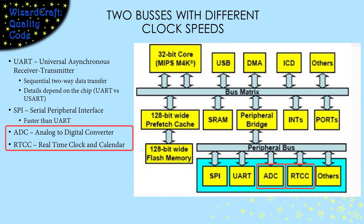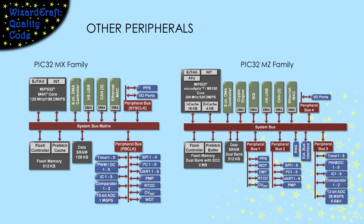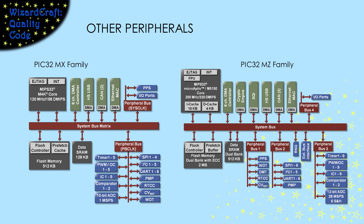The last two devices that all PIC32s contain are analog-to-digital converters and a real-time clock and calendar. The details of the peripherals differ between the MZ and MX families of PIC32s — the MZ family supports more types of devices and has four peripheral buses, where each bus can run at its own speed, but it must be a multiple of the system clock. That's our high-level view of the PIC architecture. From here, I'll make videos covering the details of how you write software for each of the peripheral devices we can connect to.